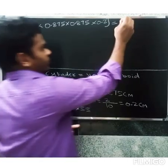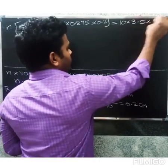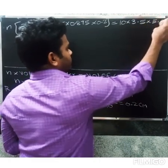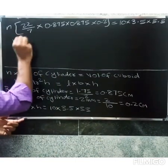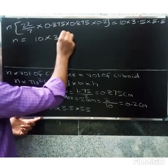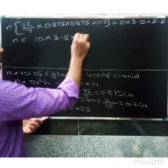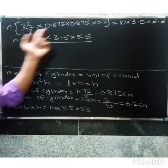Therefore n equals 10 into 3.5 into 5.5 divided by 22 by 7 into 0.875 into 0.875 into 0.2.